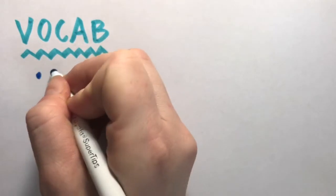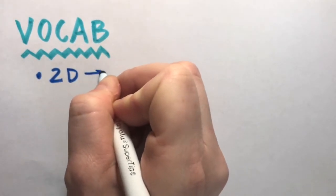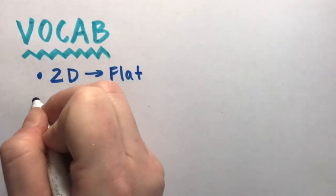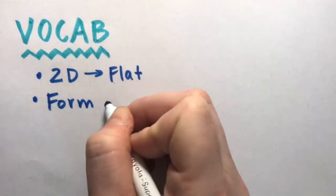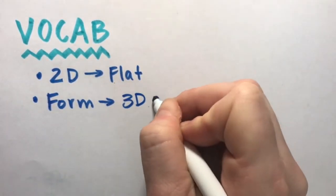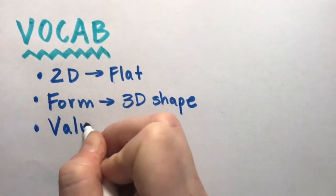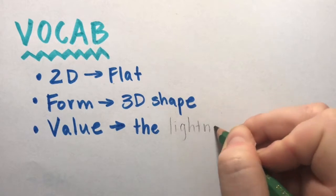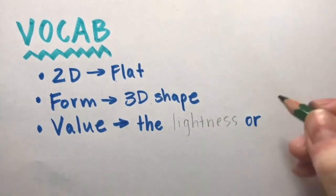First is 2D, which just means flat. Drawings are considered 2D artwork. Our next word is form and that is a 3D shape. A 3D circle is a sphere. Value is the lightness or darkness of a color. This is going to be very important when we start shading.